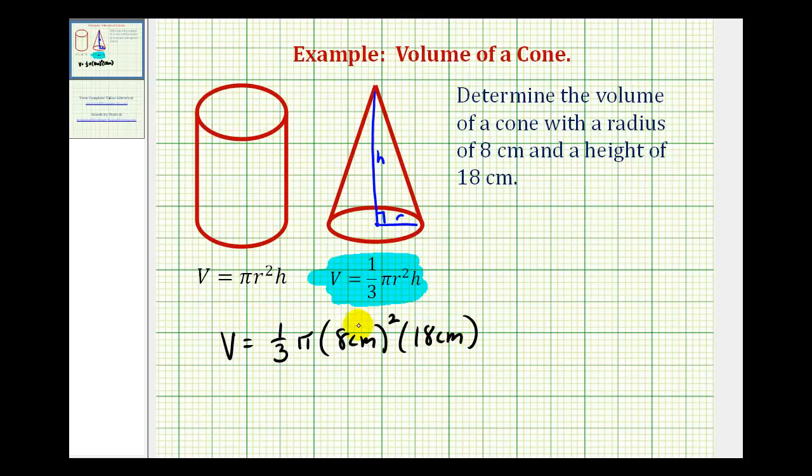So to evaluate this, we'll first simplify the exponents. So we'll have one-third times pi times, this would be 64 centimeters squared times 18 centimeters.